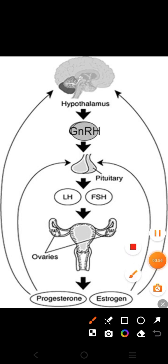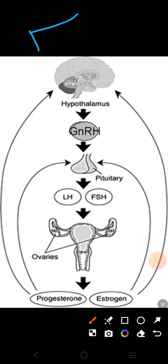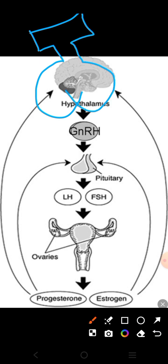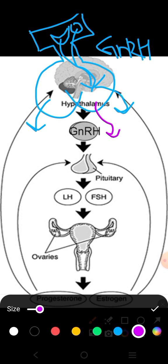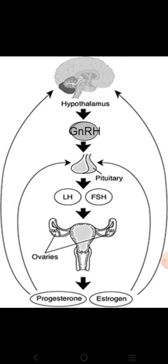Looking at the diagram, the hypothalamus is shown. Below it comes the pituitary stalk, and below that is the pituitary gland — the anterior pituitary and the posterior pituitary. In the hypothalamus there is a nucleus called the arcuate nucleus, which plays a main role in the menstrual cycle. There is also another nucleus called the preoptic nucleus. Both are responsible for releasing a factor called GnRH — gonadotropin releasing hormone or factor. When it reaches the anterior pituitary, it signals the anterior pituitary to release two hormones: FSH and LH.